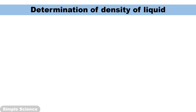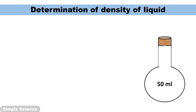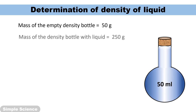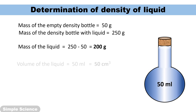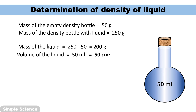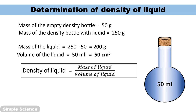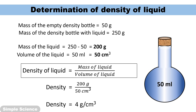Determination of density of a liquid. Take a density bottle of volume 50 ml and measure the mass of the empty bottle — say 50 gram. Fill it with water and measure the mass — say 250 gram. Mass of the water is 250 − 50 = 200 gram. Volume of liquid is 50 ml (the capacity of the bottle). So density of the liquid = mass / volume = 200 gram / 50 cm cube, giving you the density of the liquid.